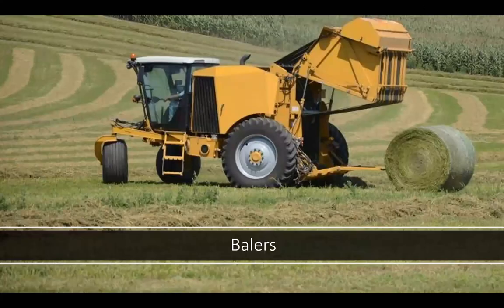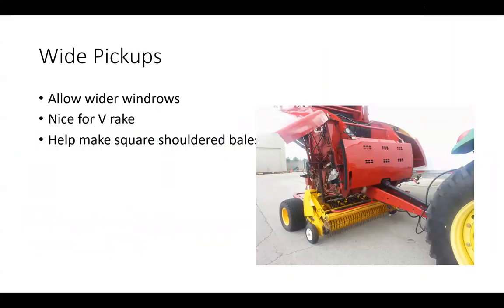Moving to balers: I always encourage producers to invest in a wide pickup, as it allows you to pick up a wider windrow. It's especially nice for V-rakes that may not stack perfectly narrow, and it helps make square-shouldered bales. Also, if your rake operator isn't the most experienced — I'll tell a story about my niece whose rows looked like a snake going through the field — a wide pickup can help pick up the slack.